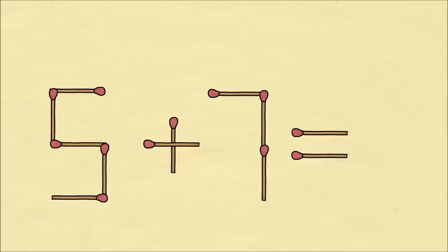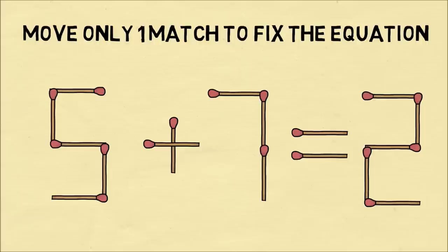In the third puzzle, we're going to take matches and form a mathematical equation. Five plus seven equals two. Now this is obviously an incorrect equation. The puzzle is, can you move only one match to fix the equation so it's mathematically correct?